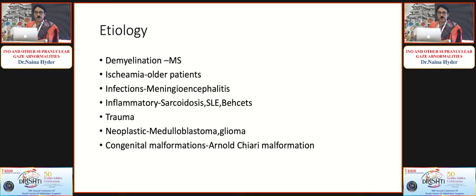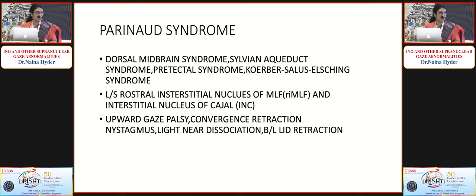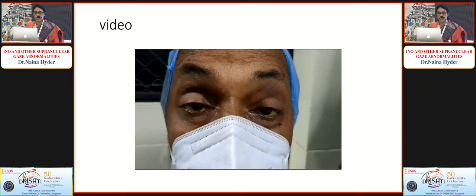The etiology of INO and one-and-a-half syndrome includes demyelination in young patients, ischemia in older patients, infections, and inflammatory causes. Parinaud's syndrome — also called dorsal midbrain syndrome — is a condition featuring vertical gaze palsy.